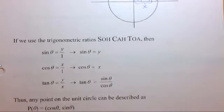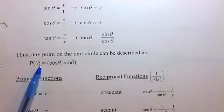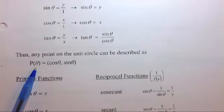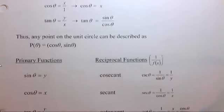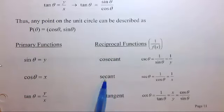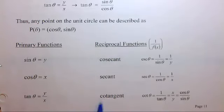Now, any point on the unit circle can be described using this. And you've seen we've done this a few times in some examples before. We're going to start looking at writing our answers in terms of the primary functions, which are sin, cos, and tan. We're also going to look at the reciprocal functions, which are cosecant, secant, and cotangent.